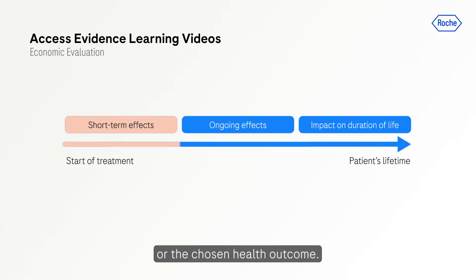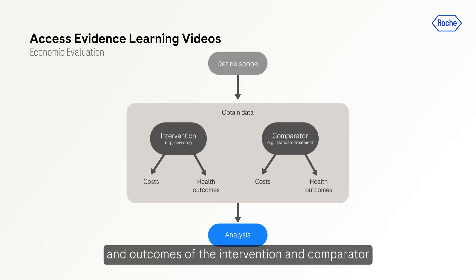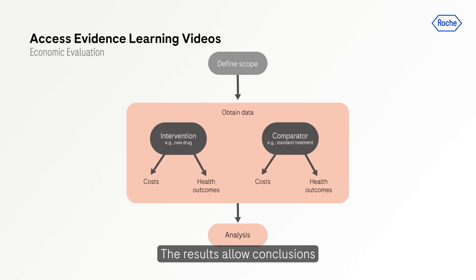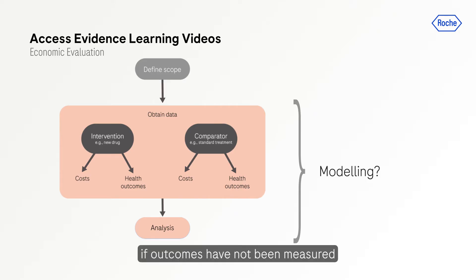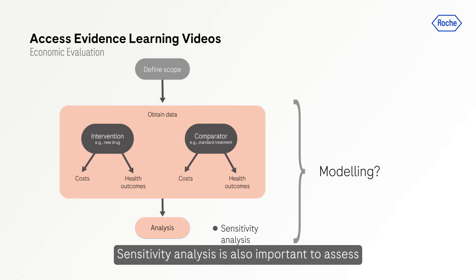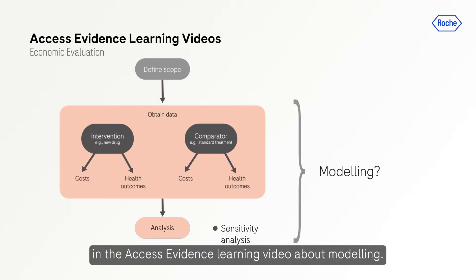The time horizon that is typically chosen is a patient's lifetime, although shorter periods may be used depending on the aims of the study or the chosen health outcome. Once the scope has been defined, data on the costs and outcomes of the intervention and comparator must be obtained and analyzed. The results allow conclusions to be drawn about value for money. Modeling may be necessary during this process — for example, if outcomes have not been measured over a long enough period for the chosen time horizon. Sensitivity analysis is also important to assess the reliability of results; these techniques are explained in the Access Evidence learning video about modeling.